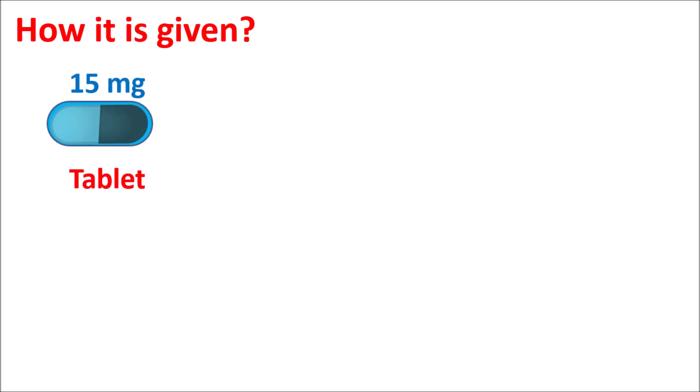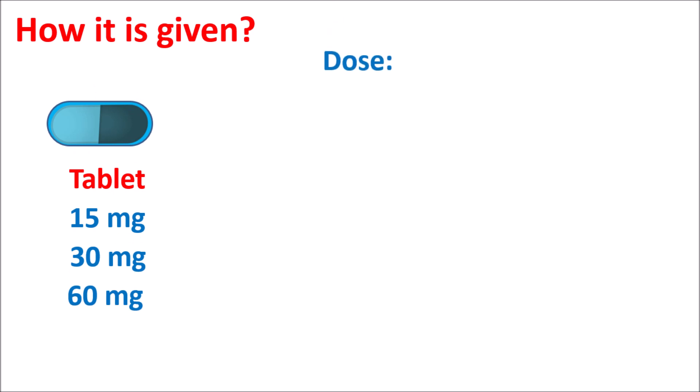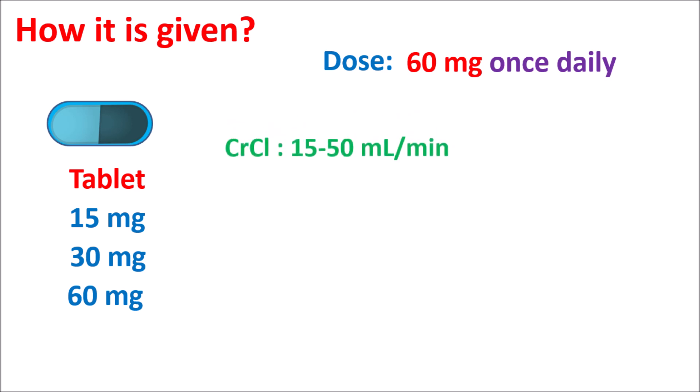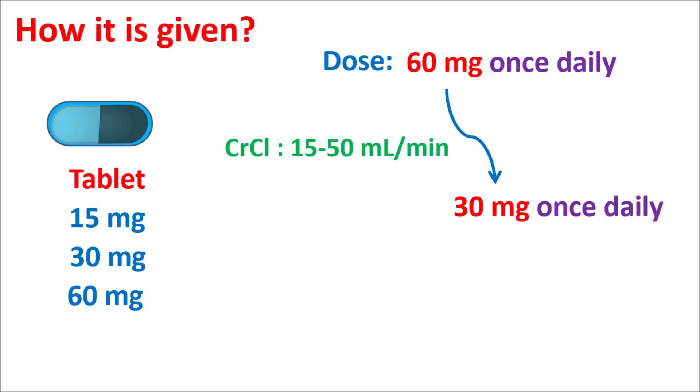This drug is available as tablets in different strengths: 15 mg, 30 mg, and 60 mg. The dose of Edoxaban is started at 60 mg given once daily. Before administering, creatinine clearance should be checked. In people with creatinine clearance between 15 to 50 ml per minute, the dose should be reduced to 30 mg once daily. In people with creatinine clearance 50 to 95 ml per minute, the full dose of 60 mg once daily can be given. When creatinine clearance is greater than 95 ml per minute, this drug is ineffective and should not be used.